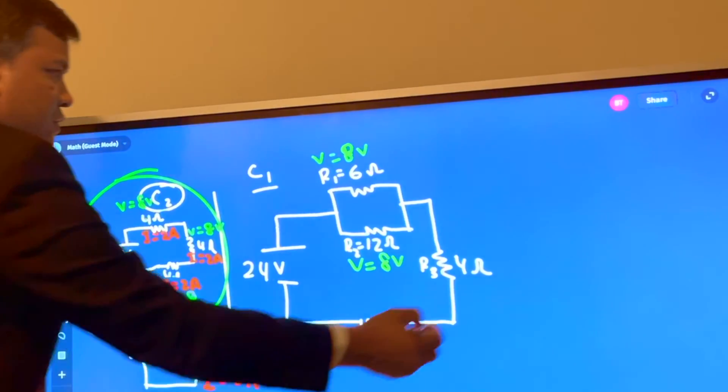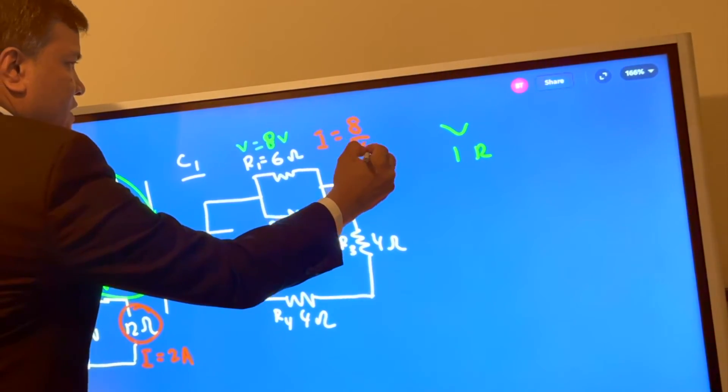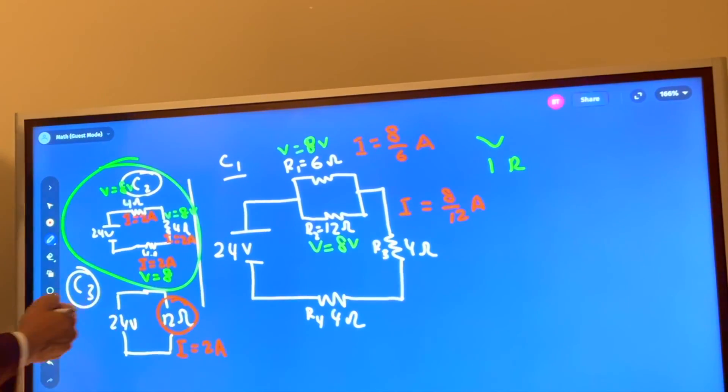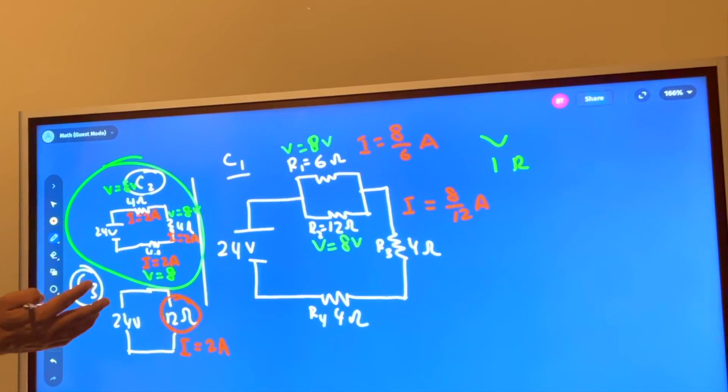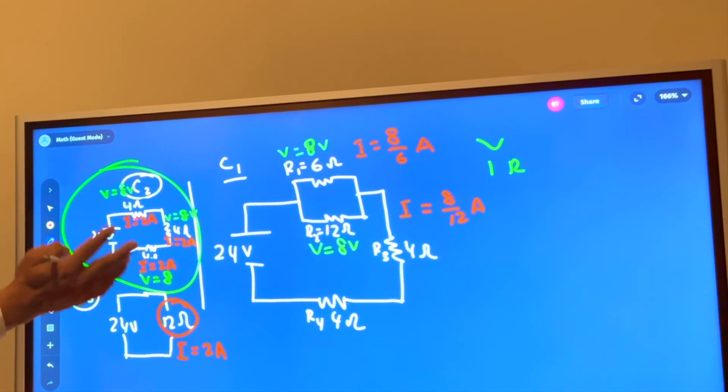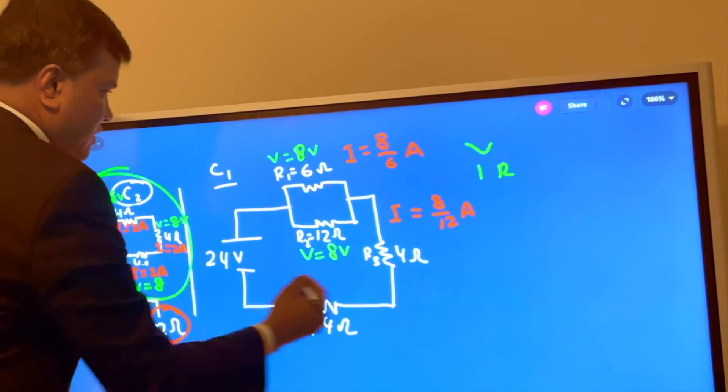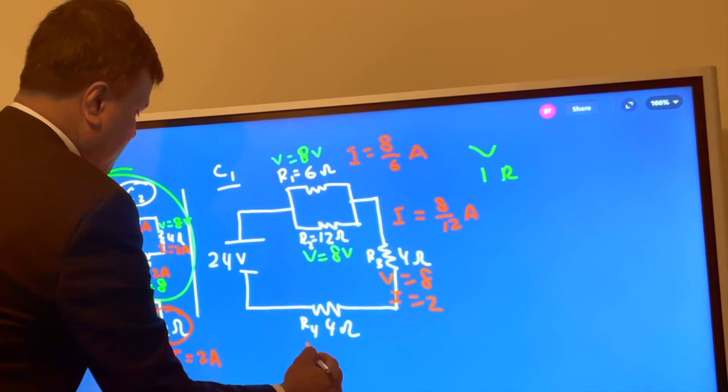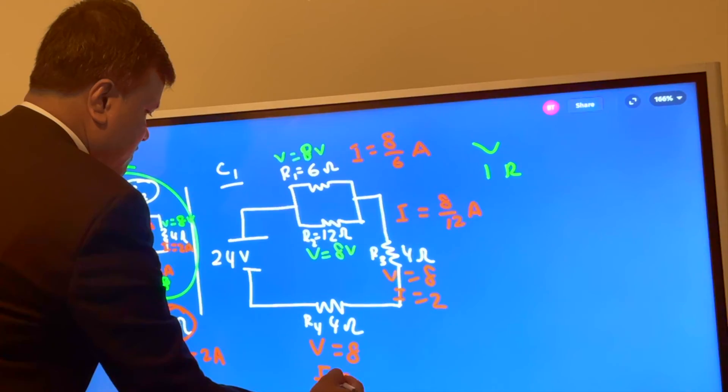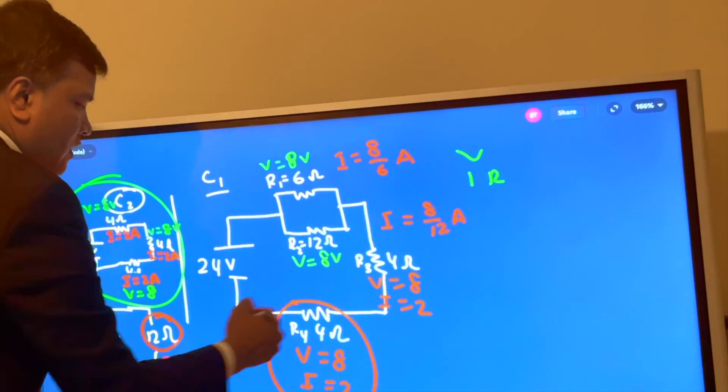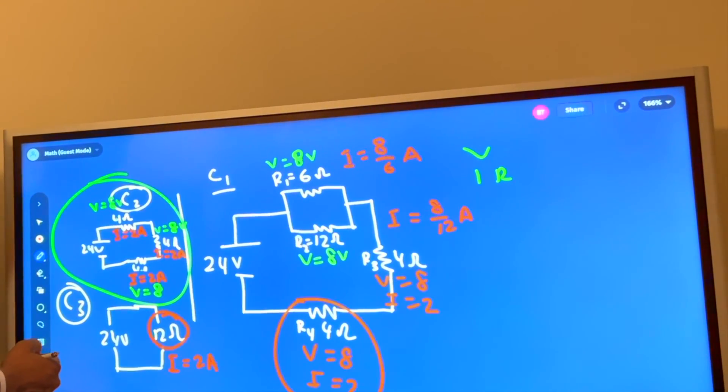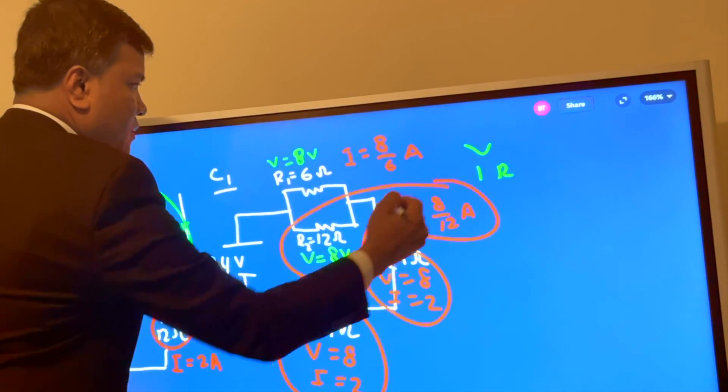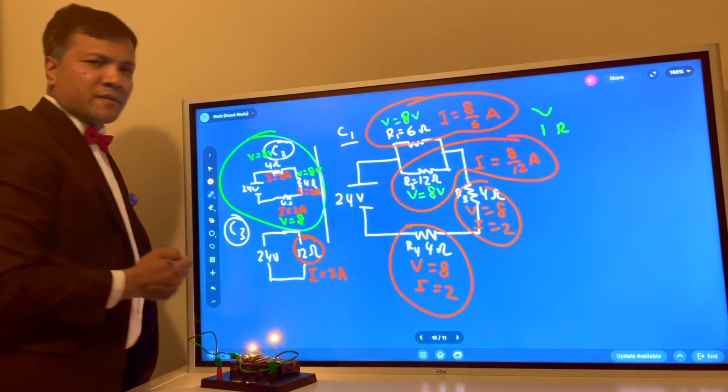So then what is the current? The current is eight over two ohms. So we know now voltage and current for each and every single resistor. This one is the same, this one voltage is eight and the current is two. This one voltage is eight and current is two. So we know voltage and current for bulb four, bulb three, bulb two, and bulb one.